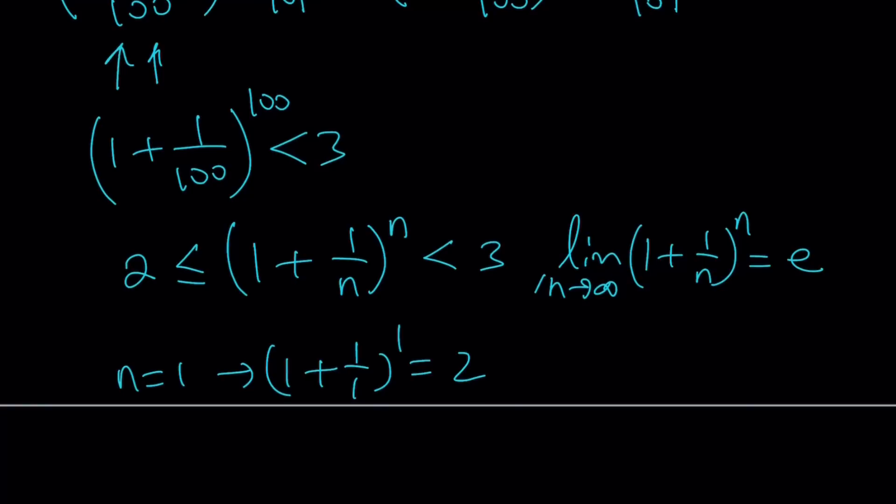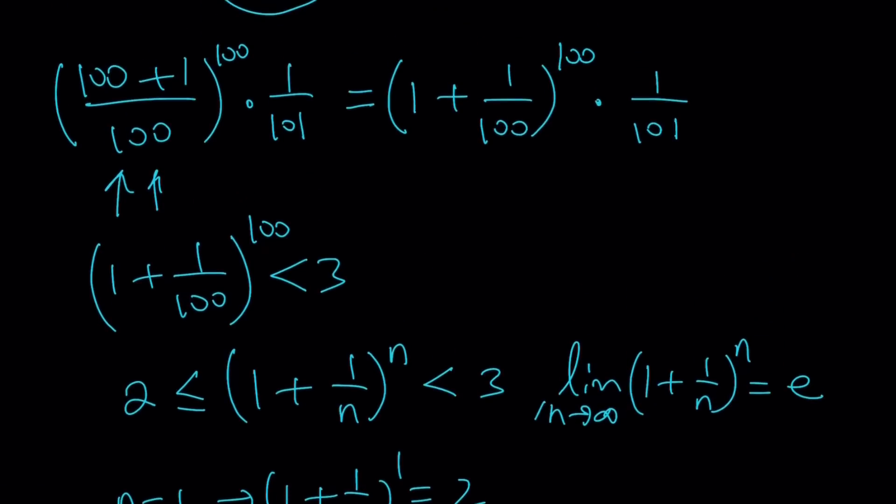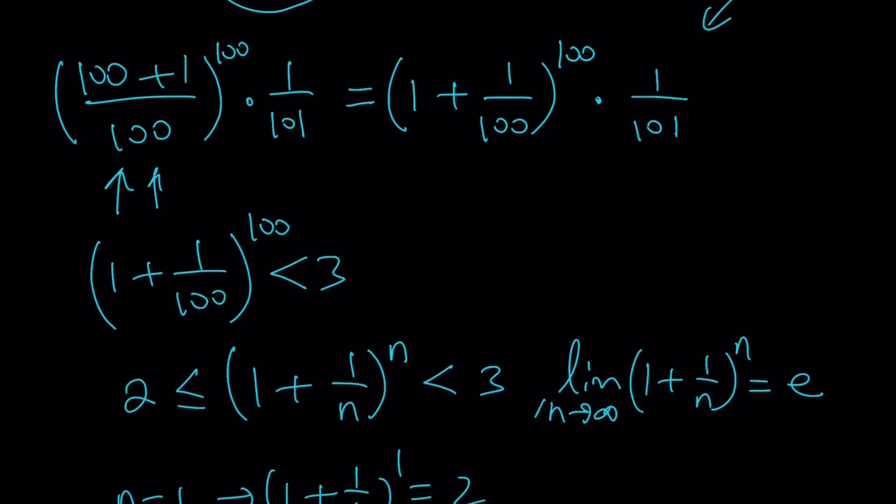So what does this give us? This guy is less than 3. So we got this expression right here. So since this is less than 3, this is going to be less than 3 times 1 over 101, and obviously this is less than 1. That's important. Remember, we were trying to get less than 1 or greater than 1. And why is this less than 1? Because that's a small number. 3 over 101 is actually going to be even less than 3 over 100, which is 0.03.